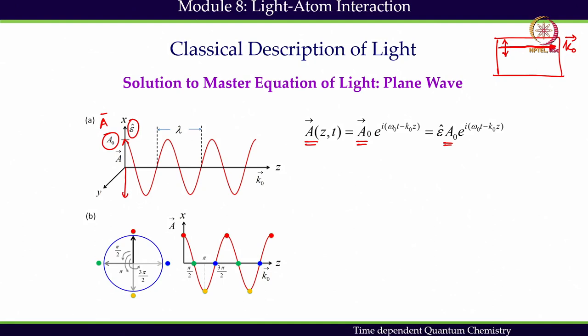What we have plotted here is the real part of the vector potential, which is nothing but A₀ cos(ω₀t − k₀z). We often represent a plane wave with the help of complex notation because the subsequent mathematics becomes easier to deal with — otherwise the complex form does not mean anything physical. We have to convert it to the real part, and the real part is the cosine part — the cosine wave. So the vector potential is nothing but a cosine wave, and light is a cosine plane wave in a one-dimensional problem.